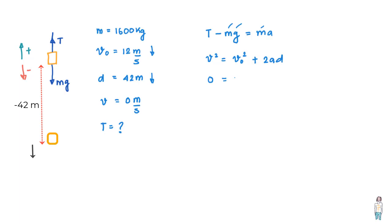Plus 2 into A into the distance covered, and distance here we have to write as minus 42 meters because the displacement is in downward direction. And what we find is that A equals 12 by 7 meters per second square, and this is deceleration.